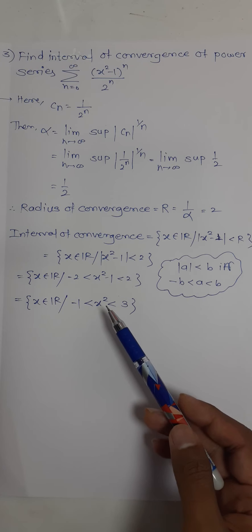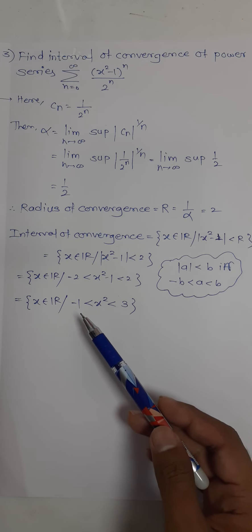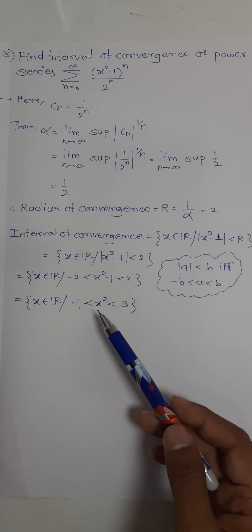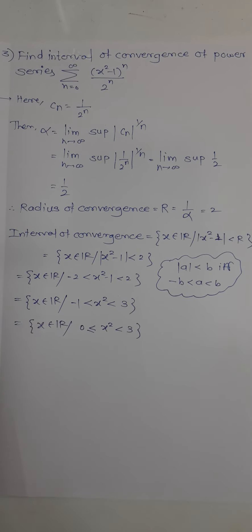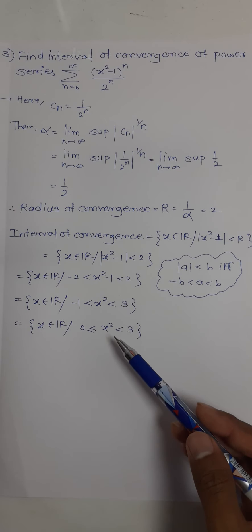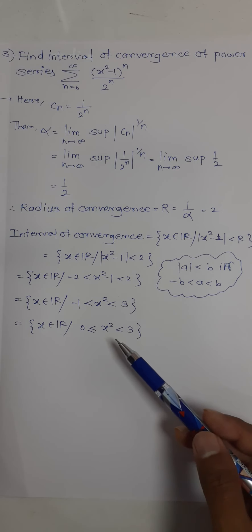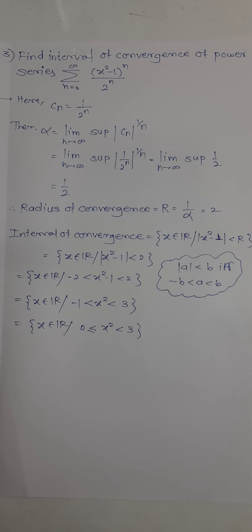x squared is always positive, meaning non-negative, so it's obviously greater than or equal to 0. We can write this as: since x squared is always greater than or equal to 0, x squared is less than 3, meaning mod x is less than root 3.